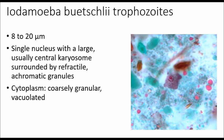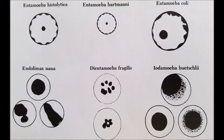This last slide gives more detail on distinguishing species based on the nucleus. Entamoeba histolytica in the upper left has a central karyosome with even peripheral chromatin. Next to it, Entamoeba hartmani looks the same but is smaller. Entamoeba coli has an eccentric karyosome and irregular peripheral chromatin. In the bottom left, Endolimax nana has a large, blot-like karyosome lacking any peripheral chromatin. And on the bottom right, Iotamoeba bushleyi also has a large karyosome.